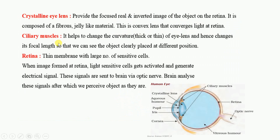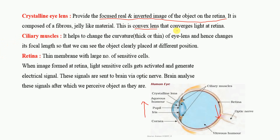The next part is the crystalline eye lens. Even though most of the refraction happens at the cornea, the lens does the fine focusing — it focuses the real and inverted image of the object on the retina. The lens is composed of fibrous jelly-like material, is a convex lens, and converges the light at the retina.